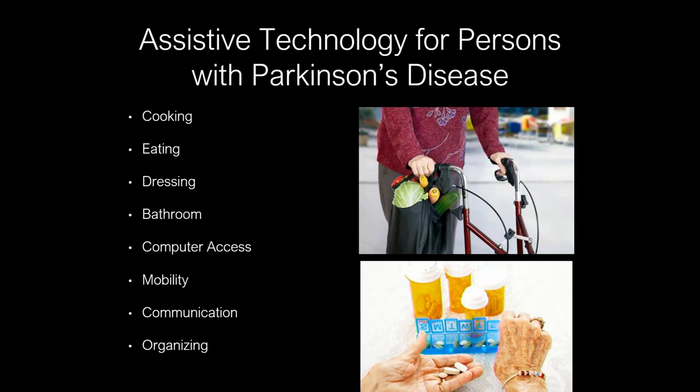What types of things can assistive technology help with? I've mentioned today I'm going to talk specifically about phone access, computer access, and a little bit about communication. But there are a number of categories — items to assist with cooking, whether it's adapted cutting boards or a knife, or a glove to prevent knife cuts. Eating, alternative utensils, dressing equipment.